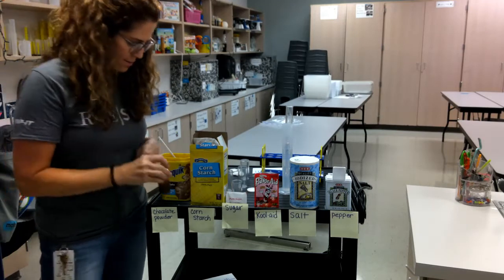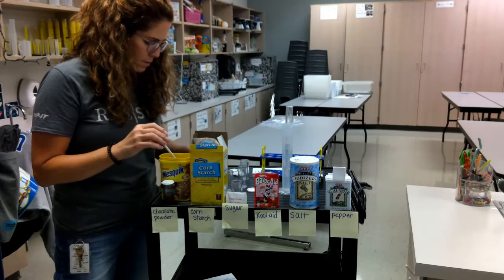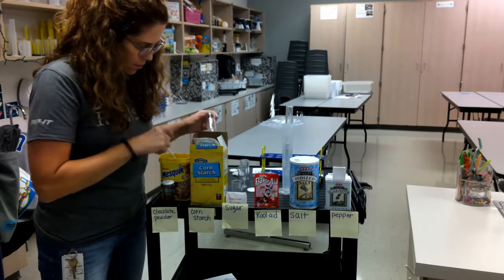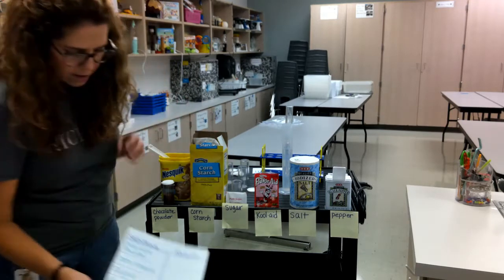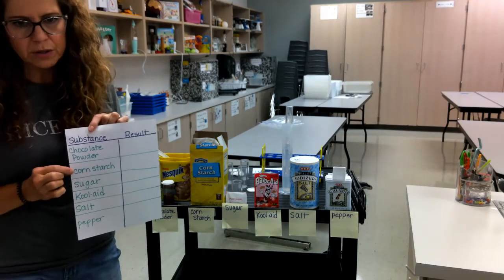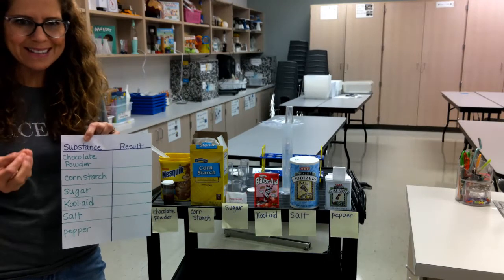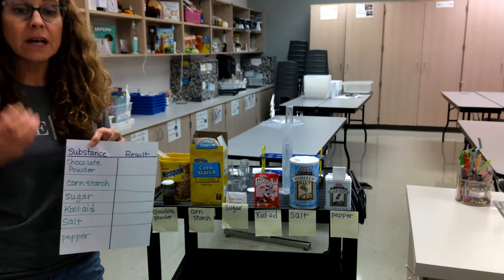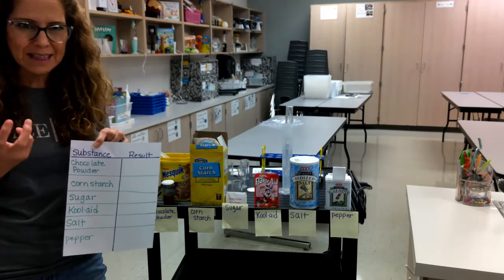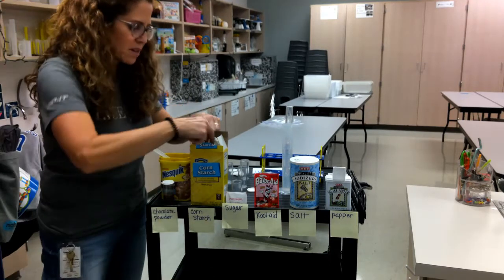Smells good. I like chocolate. Okay, so the next substance that we're going to do is the cornstarch. Cornstarch is used for baking. It's used to thicken things up. So if your mom's making gravy, cornstarch kind of makes it thick.